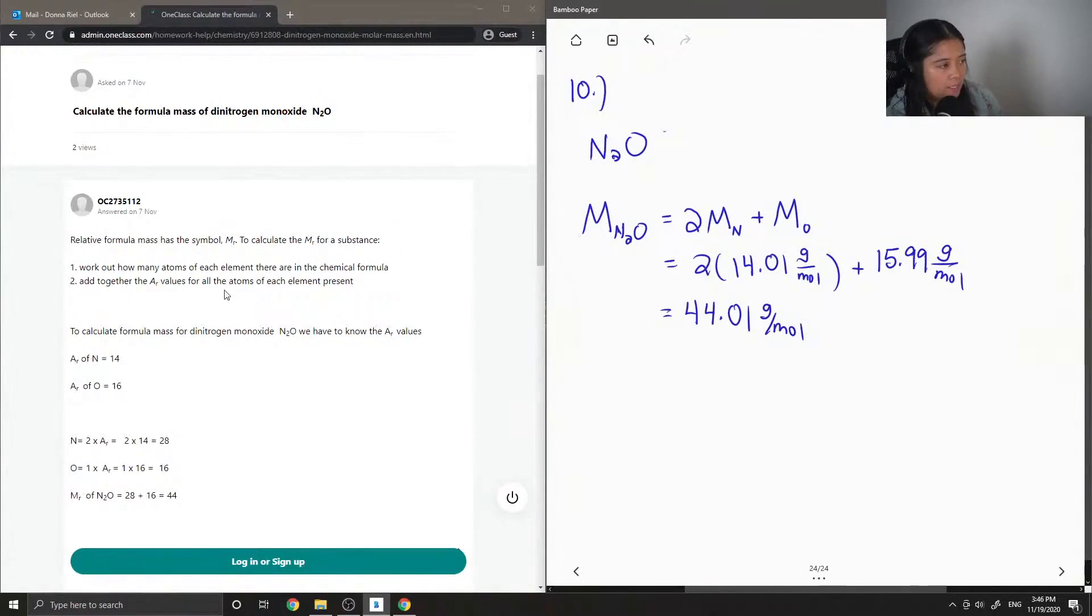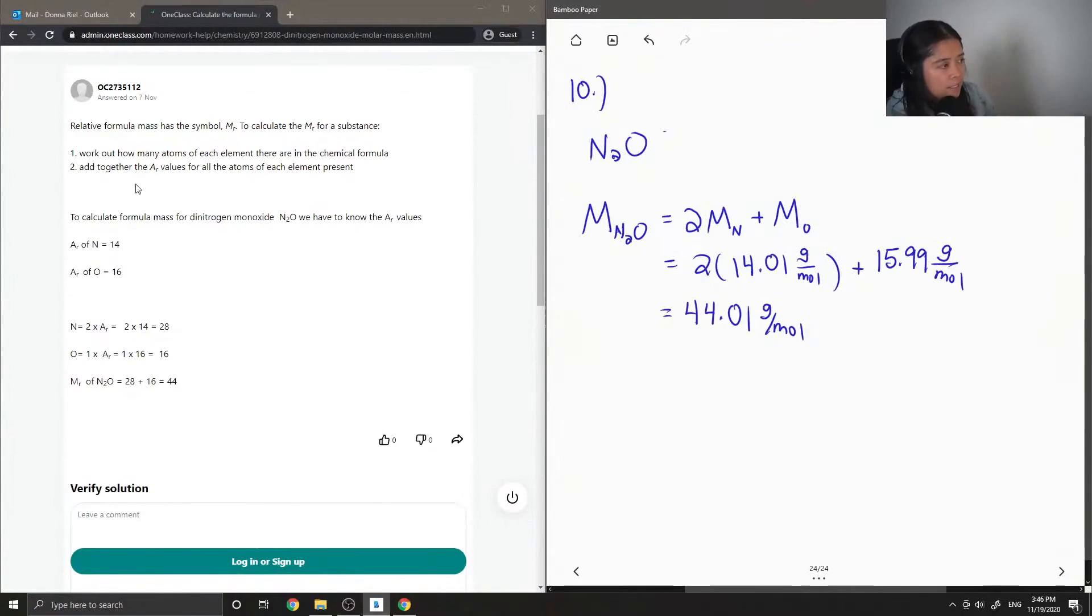Relative formula mass has the symbol MR. To calculate the MR for a substance, step 1, work out how many atoms of each element there are in the chemical formula. Step 2, add together the AR values for all the atoms of each element present. So AR stands for the relative atomic mass. So to calculate formula mass for dinitrogen monoxide, we have to know the AR values. Nitrogen is 14, oxygen 16.